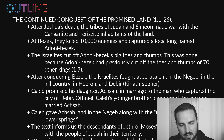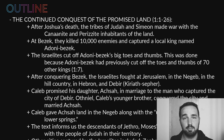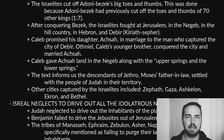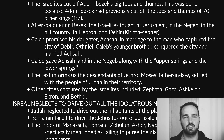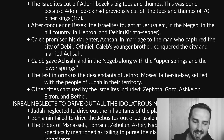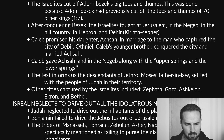After conquering Bezek, the Israelites fought at Jerusalem, in the Negev, in the hill country, in Hebron, and in Debir. Caleb promised that whoever conquered the city of Debir could marry his daughter, named Aksa. Well, it was his younger brother Othniel who conquered it — so that's how Othniel is both Caleb's brother and his son-in-law, because Othniel married his niece. Caleb gave Aksa some land — the Negev, part of southern Canaan — and also the upper and lower springs.